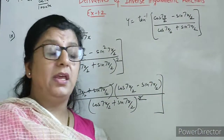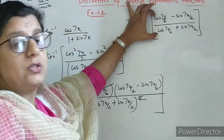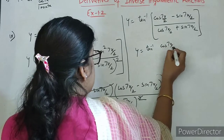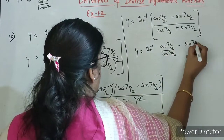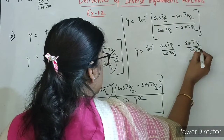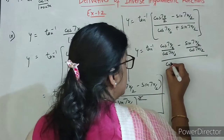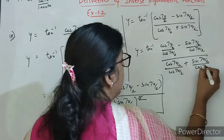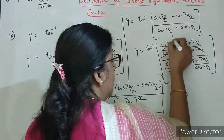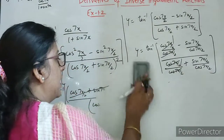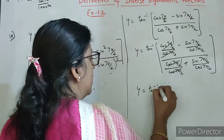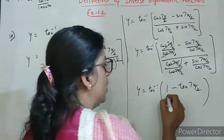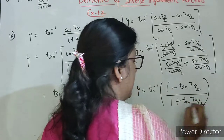Abhi tak simplified form mein hum nahi pahunch pahe. Toh jab bhi hameh yeh form milegi students, toh hameh kya karna hai? Divide numerator and denominator by cos 7x by 2. Cos se divide karenge numerator as well as denominator. Ab divide karne ke baad kya milega? Yeh cancel 1, yeh cancel 1. So hum kya likh sakte hai yaha par? This we can write as 1 minus tan 7x by 2 upon 1 plus tan 7x by 2.